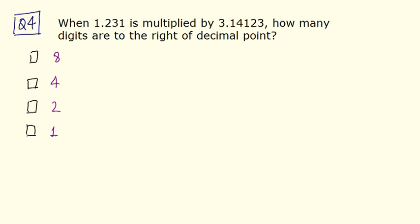Let's move on to question number 4. You are asked how many digits are there to the right of decimal point when these two numbers are multiplied. So you know, we don't need to multiply these two numbers completely. We can directly find out how many digits are there on the right of the decimal point. First, let me write the numbers here: 3.14123 and I have 1.231.